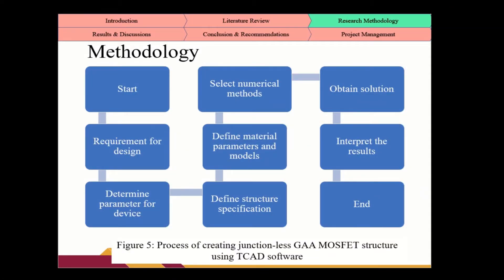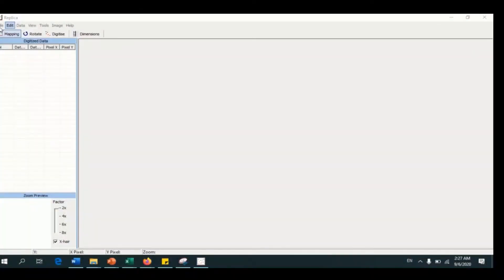This is the overall process of creating the junctionless GA MOSFET structure using TCAD software. First, we determine the requirements for design and parameters for the device. Then we define structure specifications and material parameters like electrode, mesh, region, and materials. The solution step involves obtaining the biogen log, solve, load and save.